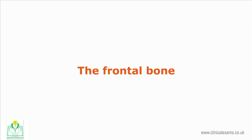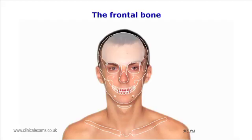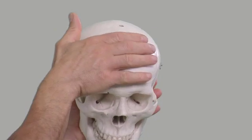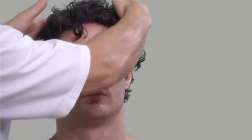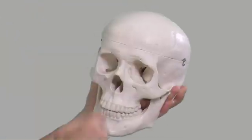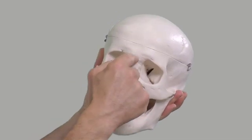The frontal bone forms the broad area above the eyes and extends superiorly under the hairline. Superiorly and laterally it articulates with the parietal bones, and laterally with the sphenoid and zygomatic bones. Anteriorly it forms the margins and roof of the orbits, and superficially it articulates with the nasal bones. It also articulates with several other bones.